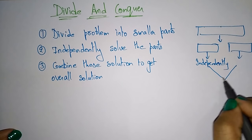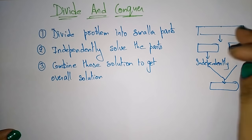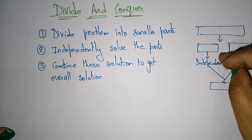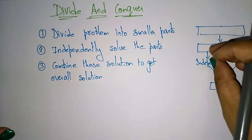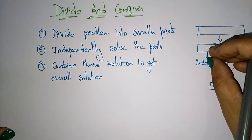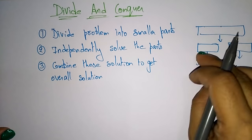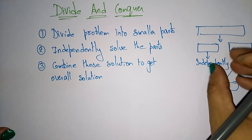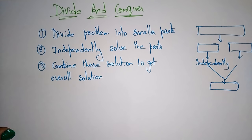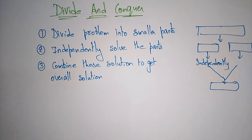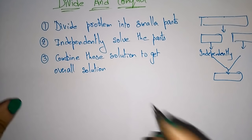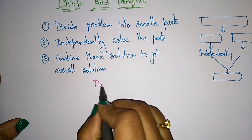So whenever you take a problem: first divide the problem into smaller parts, solve the smaller sub-problems independently, and combine these solutions to get the overall solution. These are the steps involved in divide and conquer. Let me explain this diagrammatically.